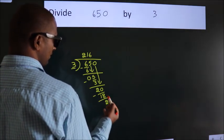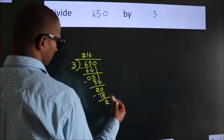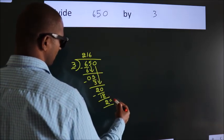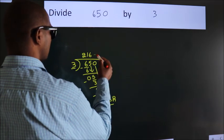After this, no more numbers to bring it down. So, we stop here. This is our remainder. This is our quotient.